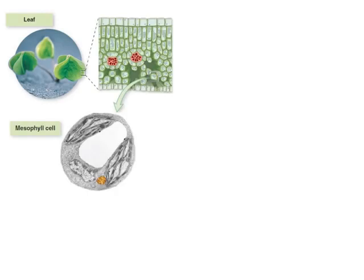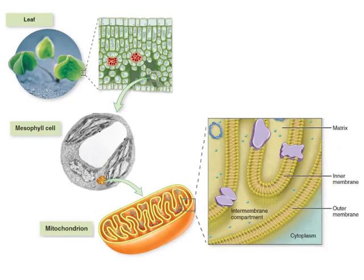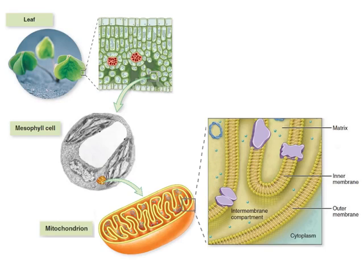All eukaryotes have mitochondria. Let's focus on a plant. Each plant consists of several cells, each of which have mitochondria. A mitochondria has an outer membrane and an inner membrane. Between the outer and inner membranes is a space called the intermembrane compartment. The inner membrane encloses fluid called the matrix. The reactions of the electron transport chain occur across the inner membrane of the mitochondria.